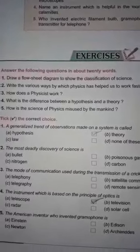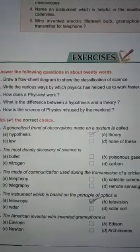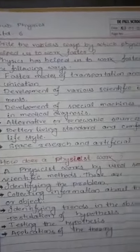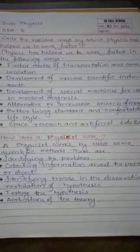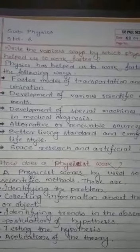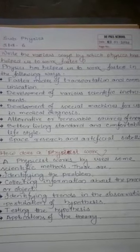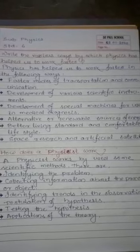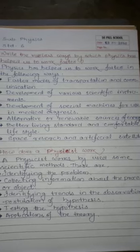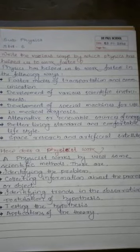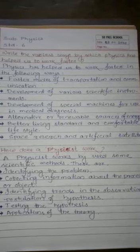Now we will discuss some questions and answers. Question two: write the various ways by which physics has helped us to work faster. Physics has helped us in the following ways: faster modes of transportation and communication; development of various scientific instruments; development of special machines for use in medical diagnosis; alternative or renewable sources of energy; better living standards and comfortable lifestyle; and space research and artificial satellites.